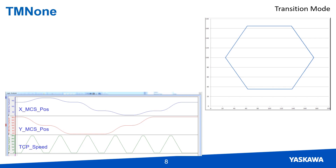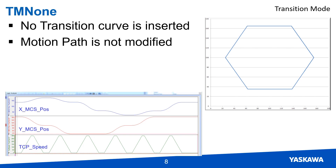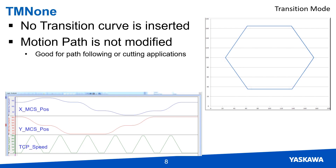TM None is your basic disabled transition mode. The motion path is not modified in any way, and the motion may appear jerky or harsh because the TCP velocity is going to zero through each corner. Most smoothing operations can change position data between the motion segments, but some applications like path following and cutting require exact motion so the part or path comes out exactly as defined by the designer. TM None is the required blending mode for these types of applications.